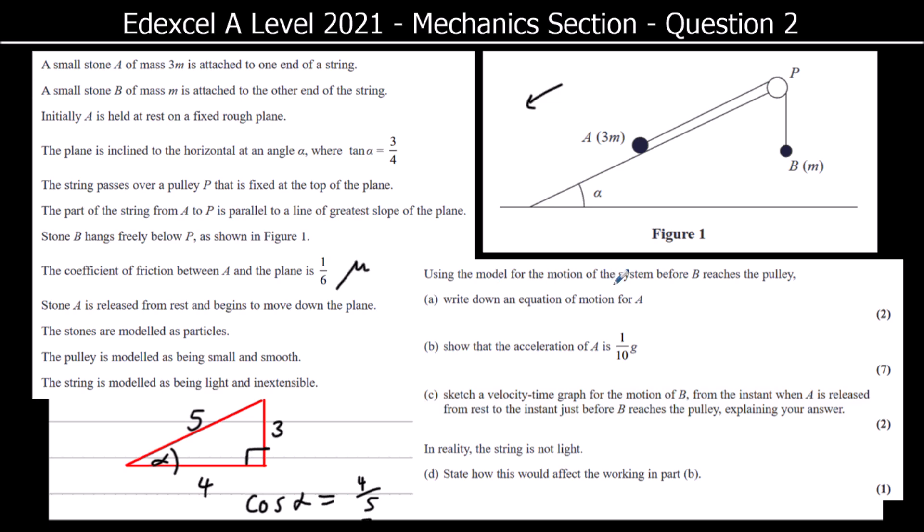Using the model for the motion of the system before B reaches the pulley, write down an equation of motion for A. So before we start, let's draw on all of the forces. The weight of A, the weight is mass times gravity. Mass is 3m, so it's 3mg. For B, mg, we've got the tension in the string which is resisting the motion of A and pulling B up.